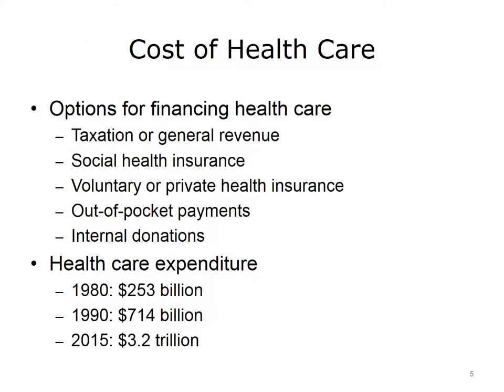When we look at the cost of healthcare, there are five general options for financing healthcare. The first is taxation, or general revenue. The second is some form of social health insurance. The third is voluntary or private health insurance. The fourth is out-of-pocket payments that patients make to take care of their illnesses. And the fifth is internal donations, which may come from communities, organizations, or professional societies.